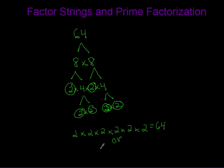Our factor is two and there are six of them, so we can write it as two to the sixth power. One other thing to note: with all the prime factorizations, one was never used. You can't use one with factor strings, and you can't use one with prime factorization. So that's how you do factor strings and prime factorizations. See you later!